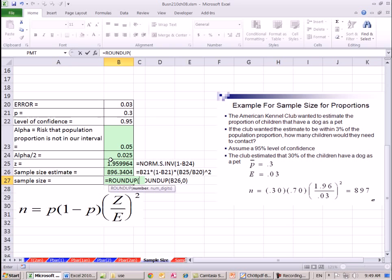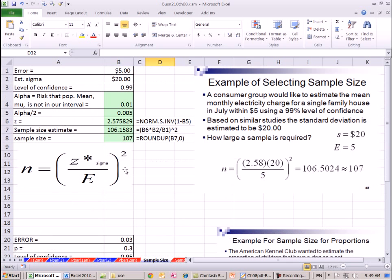Now notice, if we were doing normal rounding, it would be 896.3. So for rounding there, it would go to 896. But round up always going to go up. You tell it to the integer with a 0, and boom. So we'll take 897, our estimate for sample size. All right, in this video, we saw two different formulas for estimating sample size. That's our last video for chapter 8. Next chapter, chapter 9, we'll do hypothesis testing. See you next video.